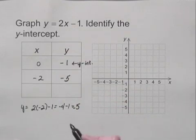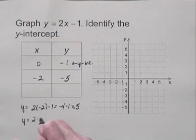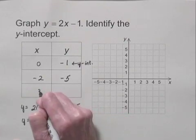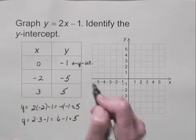And let's let x be 3. When x is 3, I have 2 times 3 minus 1, which is 6 minus 1, or 5. So that gives me the point 3, 5 on the line.